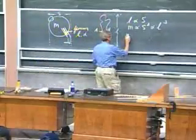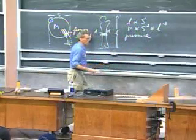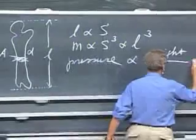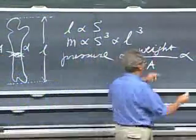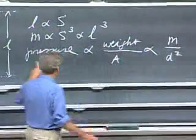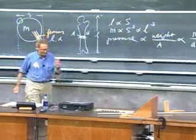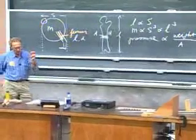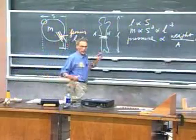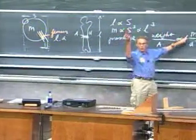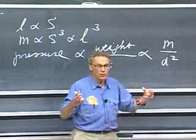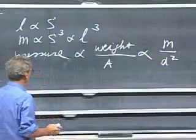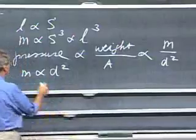Now comes the argument: pressure on the femur is proportional to the weight of the animal divided by the cross-section A of the femur — that's what pressure is. That is proportional to the mass of the animal divided by d², because the area is proportional to d². Now follow me closely: if the pressure is higher than a certain level, the bones will break. Therefore, for an animal not to break its bones, when the mass goes up by a factor of four, d² must also go up by a factor of four. Therefore, mass must be proportional to d². This is the breaking argument.